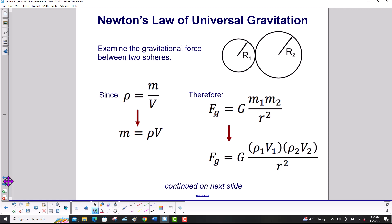Examine the gravitational force between two spheres. Since ρ is mass over volume, mass is just ρ times volume. Therefore, Newton's law of gravitation becomes this. We just replace the masses with ρ times volume.